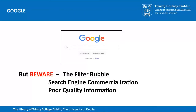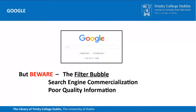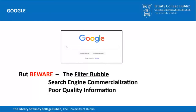Secondly, search engine commercialization. You all know that if you type something into Google, among the first results are usually results from companies looking to part you from your money. In other words, companies and firms pay a lot of money to Google so that their results arrive at the top of the page when you do a search. So your search results are skewed in favour of commercial companies.